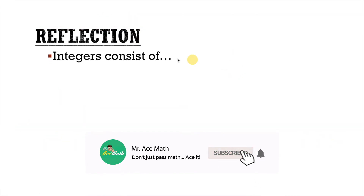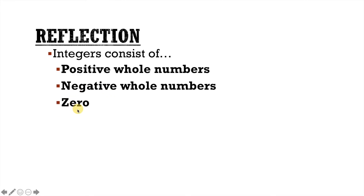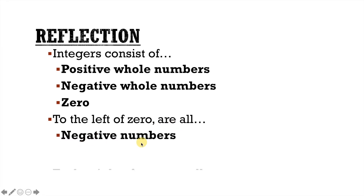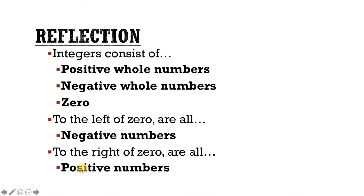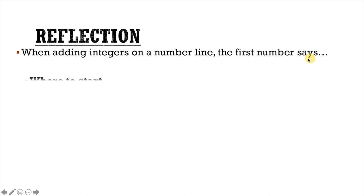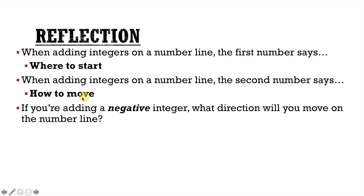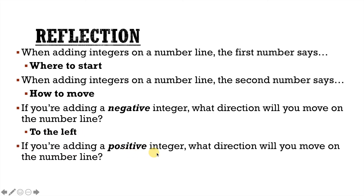So what did we learn from this lesson? Integers consist of positive whole numbers, negative whole numbers, and 0. To the left of 0 are all negative numbers; to the right of 0 are all positive numbers. When adding integers on the number line, the first number says where to start, and the second number says how to move. If you're adding a negative integer, you move to the left. If you're adding a positive integer, you move to the right.